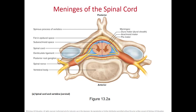Looking at a cross-section, your spinal cord is completely surrounded by your vertebra. You have the dura mater, right next to it is the arachnoid, then the subarachnoid space with cerebrospinal fluid, and actually on the spinal cord is the pia mater. So you can see this is pretty well protected.